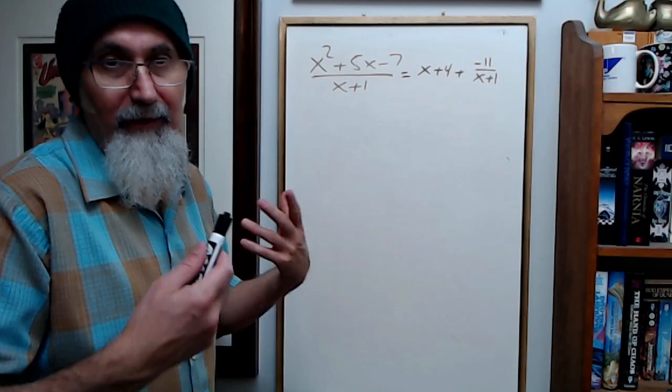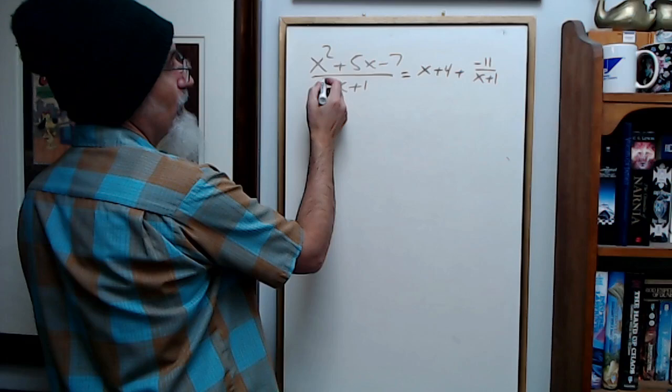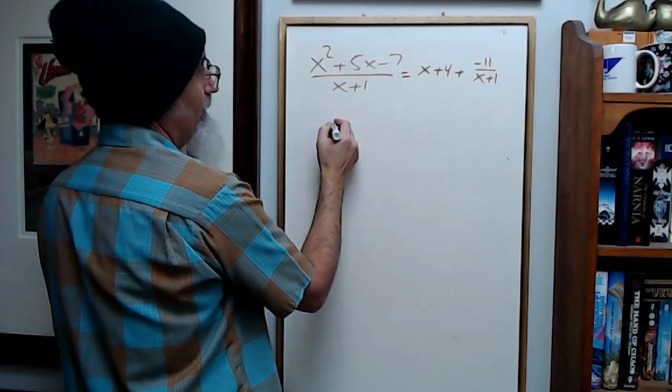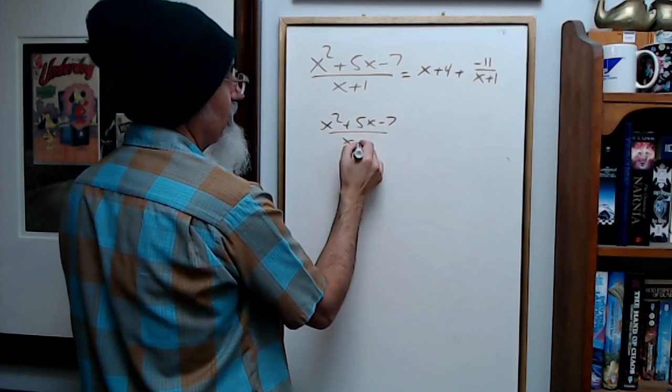You got to get into functions, graphing and stuff like that. But let's assume we wanted to do synthetic division on this: x squared plus 5x minus 7 divided by x plus 1.